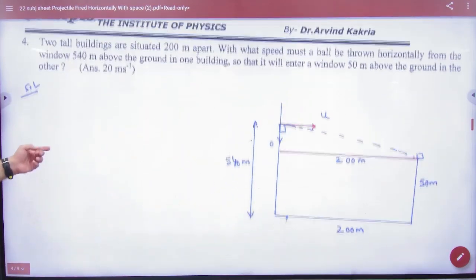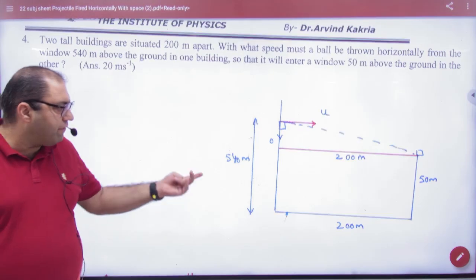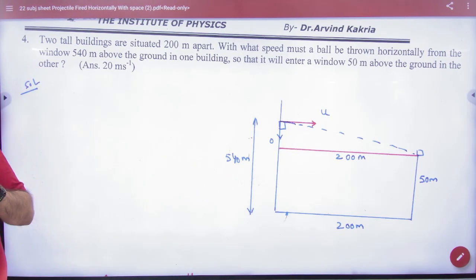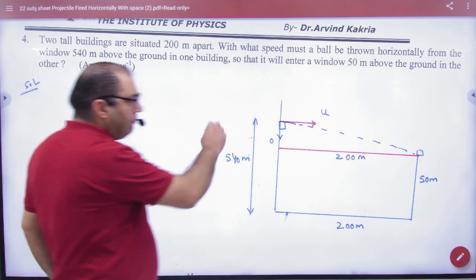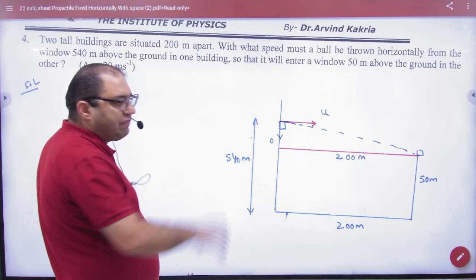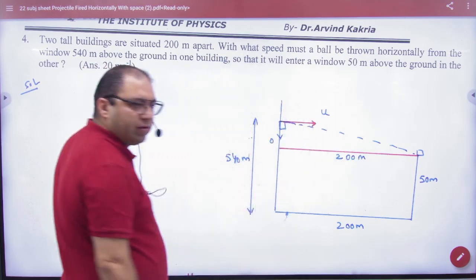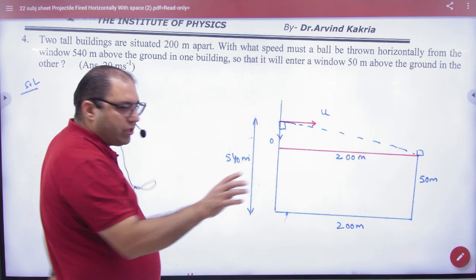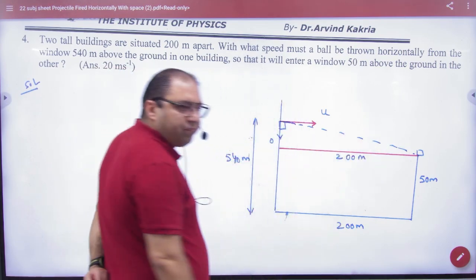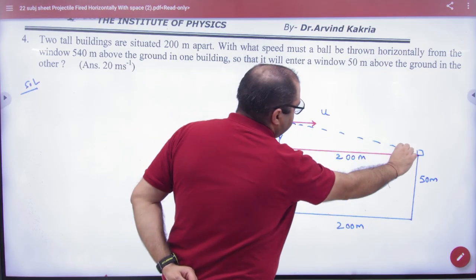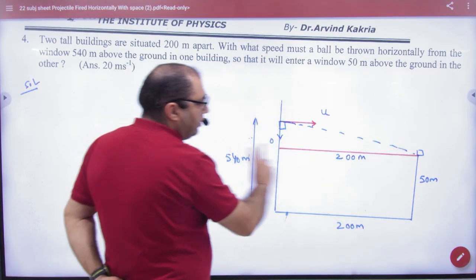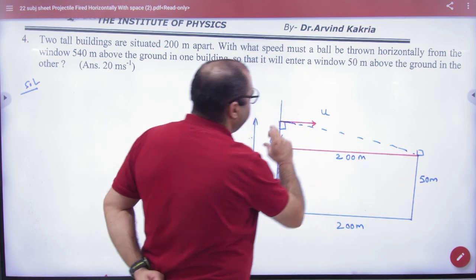There are two tall buildings, 540 and 50 meters, 200 meters apart. You have to throw a stone from this window so that it goes down to 50 meters. So your stone journey is here from here. That means in the air, under gravity, it will come in this portion. 540 to 50, what will it be? 490. So 490 meters down.